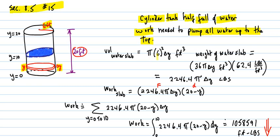is pi r squared delta y cubic feet. So the weight of the water slab is 36 pi delta y cubic feet times 62.4 pounds per cubic foot, that's the weight of the water.